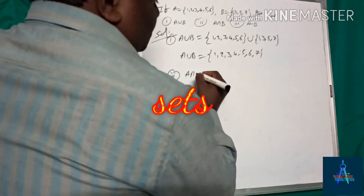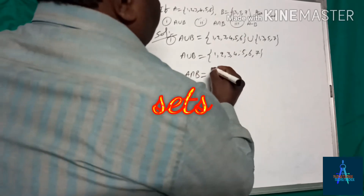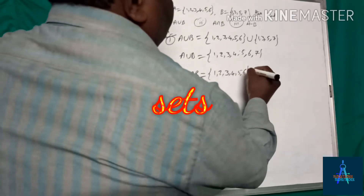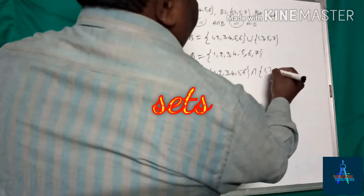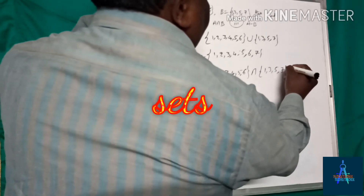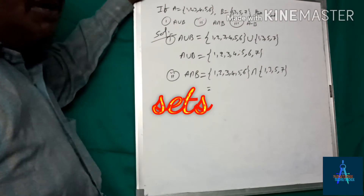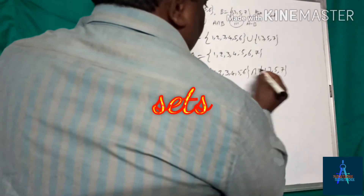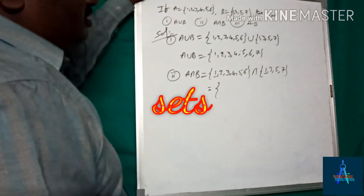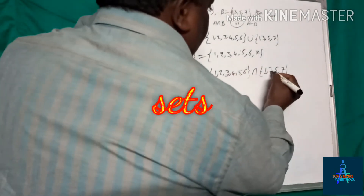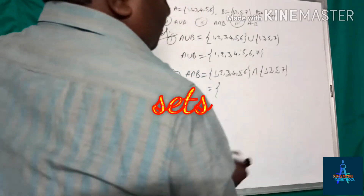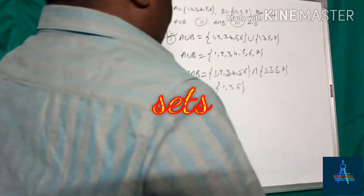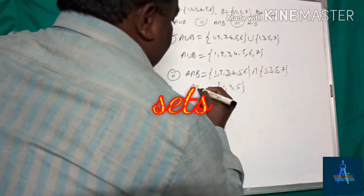Second one is A intersection B. So A is {1, 2, 3, 4, 5, 6} intersection B is {1, 3, 5, 7}. Intersection means common elements. We have 1 in both, 3 in both, and 5 in both. So A intersection B equals {1, 3, 5}.